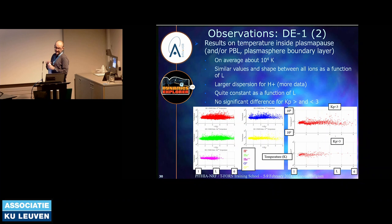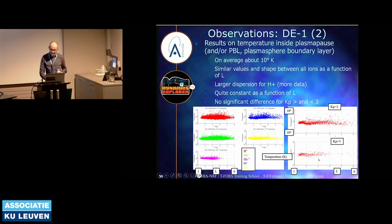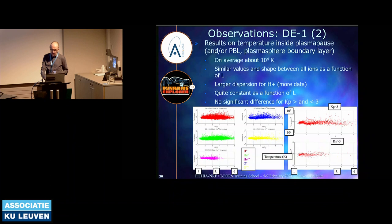We also have temperature information inside the plasmapause — or what we call the plasmasphere boundary layer when the density decrease is not strict and strong. Two plots show temperature: on the left for the five ion species, and on the right for two different Kp levels — low and high geomagnetic activity. Values are quite constant and similar for different ions and for small and high Kp. So there is not much variation in temperature compared to the much more variable density.